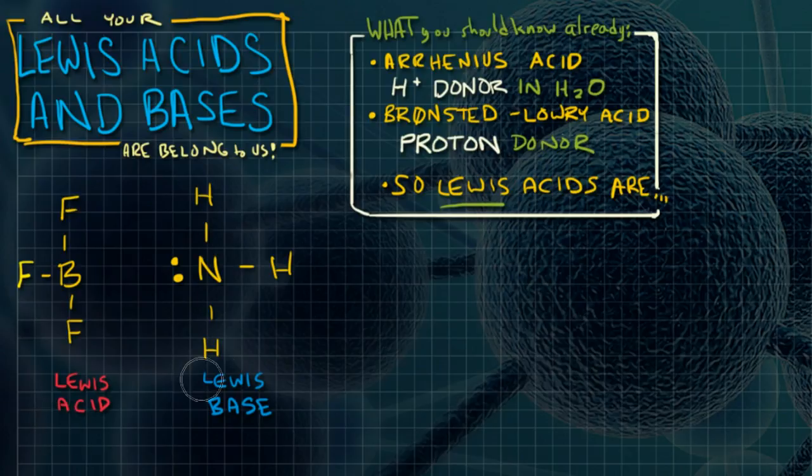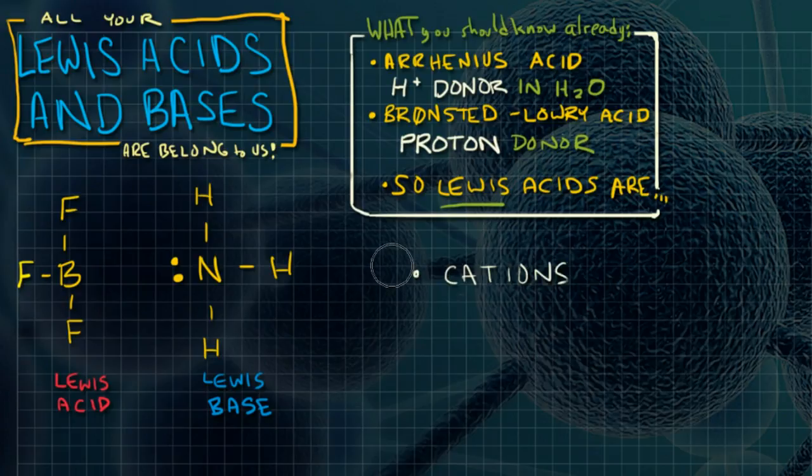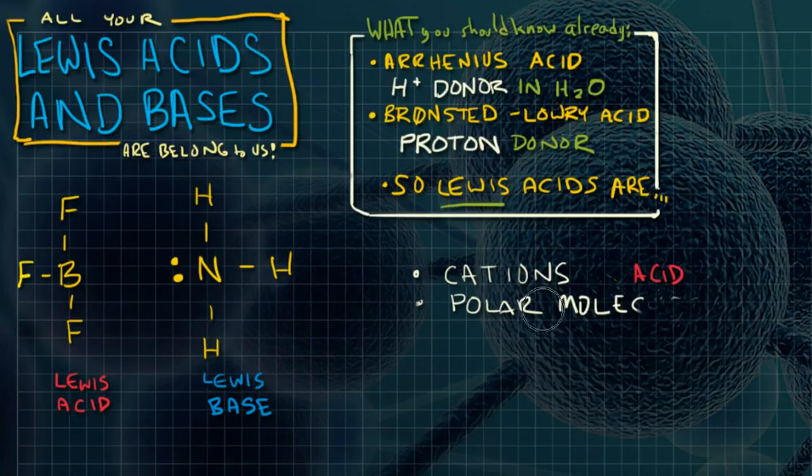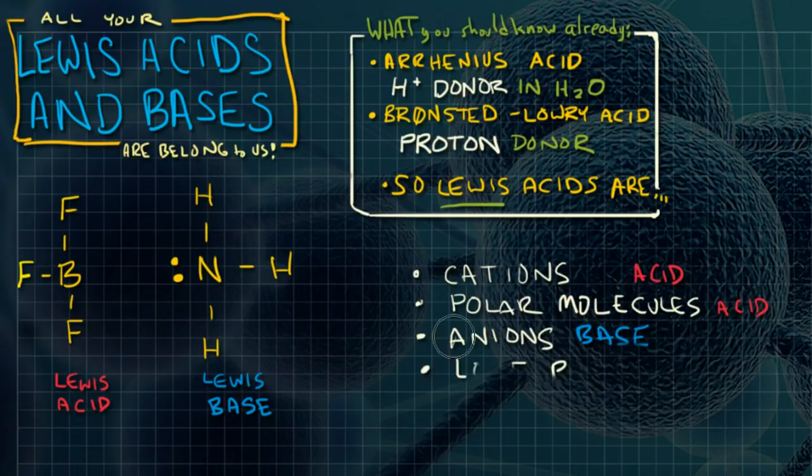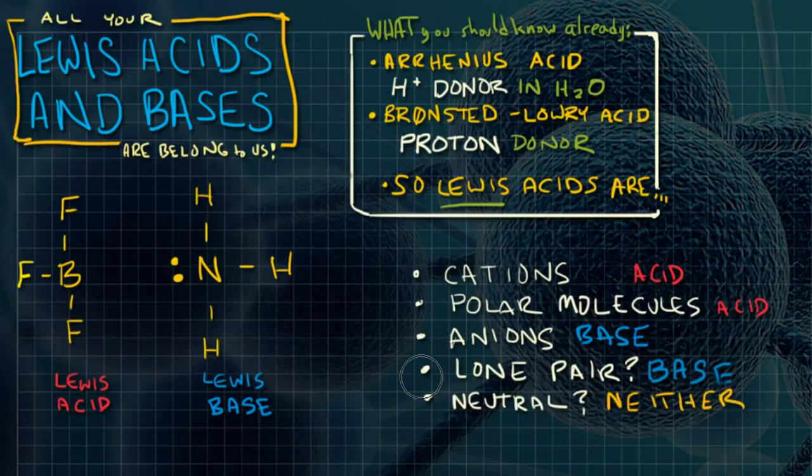So, there are some general rules to follow with Lewis acids and bases. In general, cations will be acids, polar molecules will also be acids, anions will be base, lone pair, it's a base. In fact, we just talked about that, right? And if it's neutral, like certain salts and things like that, then it's not an acid or a base, it's just neutral.